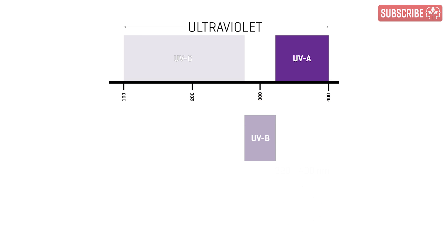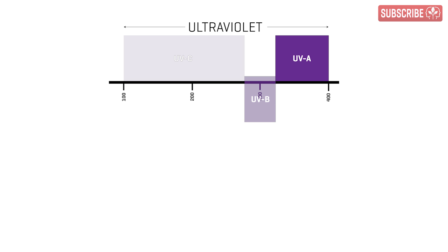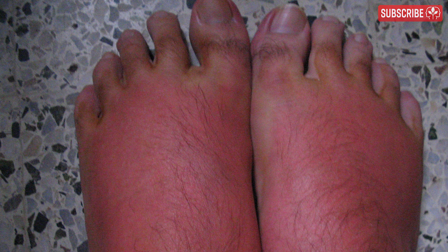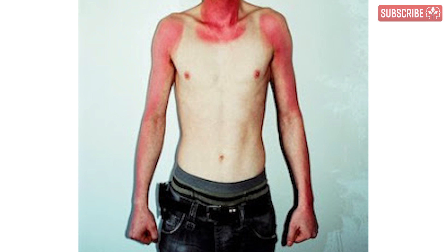UVB has a shorter wavelength than UVA and the narrowest definition of all UV subtypes, spanning just 280 to 320 nanometers, give or take. It forms just 1% of the total solar radiation reaching the Earth. Most of it is absorbed by the atmosphere — and this is kind of fortunate, because UVB packs enough punch to inflict cell damage on living organisms and permanently change their DNA.